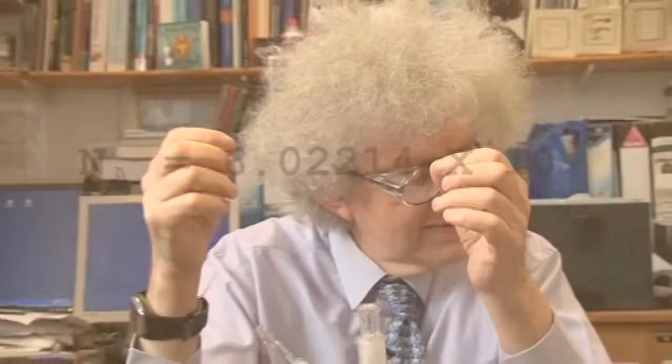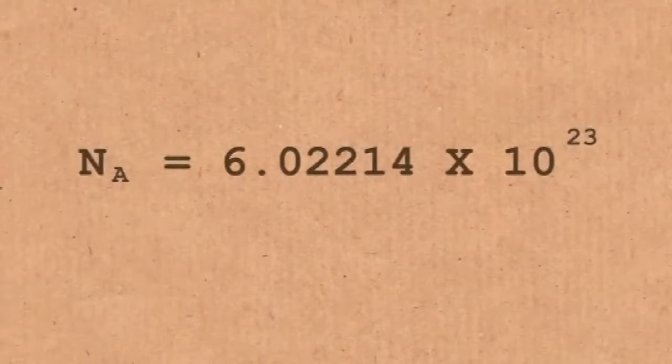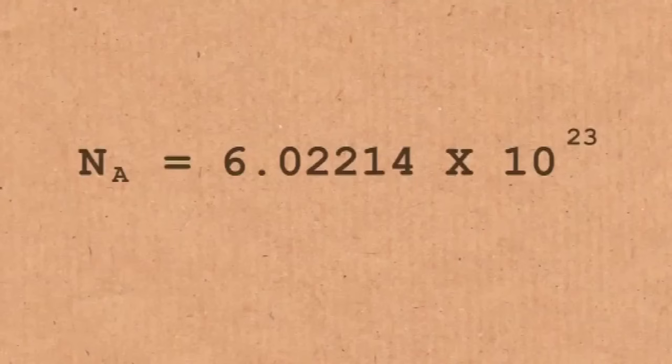I'm a chemist, and therefore I suppose the most obvious number for me to talk about is Avogadro's number. Avogadro's number is very big. Surprisingly, although I'm a chemist, I can never remember the exact value, so let me just look it up. It is 6.02214 — and there are some arguments about further decimal places — times 10 to the 23.